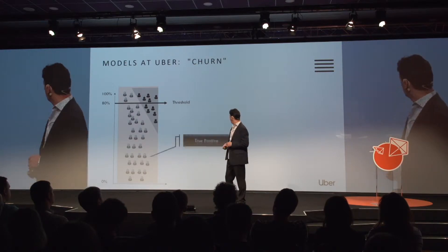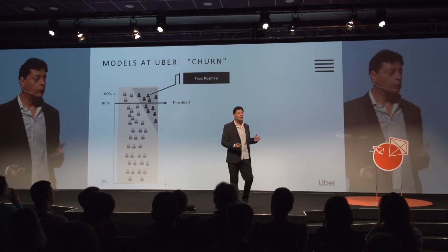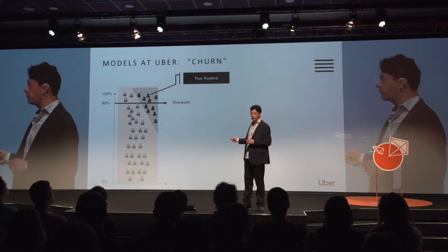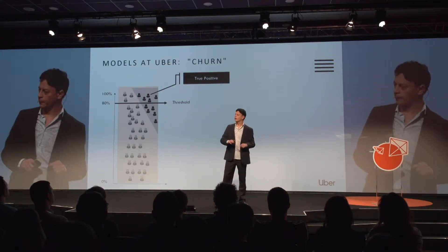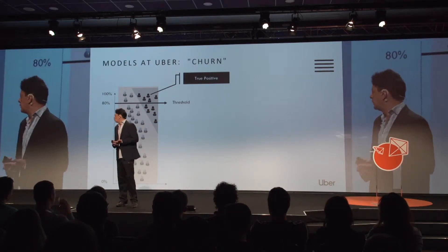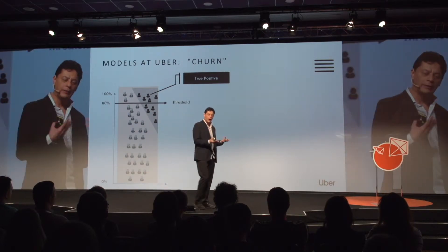If the model is good — if we trained it properly with the right variables, algorithms, and data — we'll see that the people in the top of the list have a much higher concentration of true churners, of people who actually stop driving for Uber, than the people at the bottom. Obviously, we'll have some true positives, but the model is not perfect. The model will miss people — these are false positives, and these are false negatives. No model in marketing is perfect. The total accuracy of this model can be quite low.